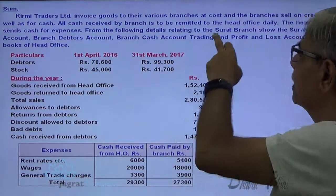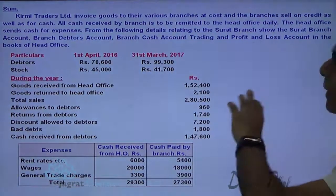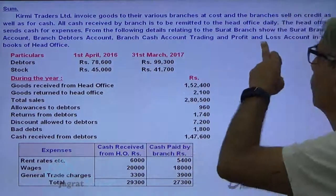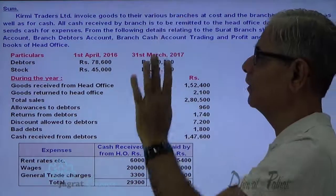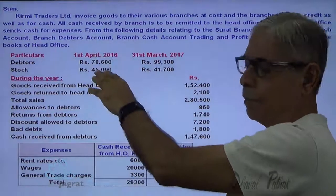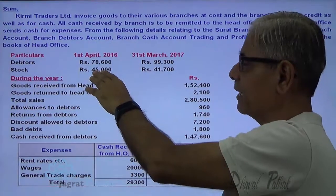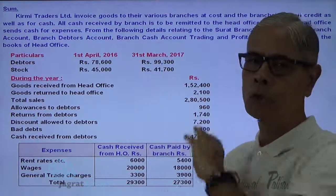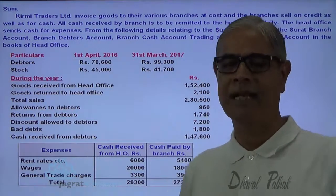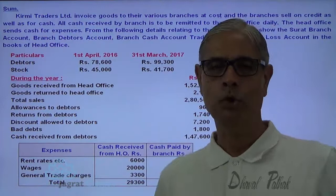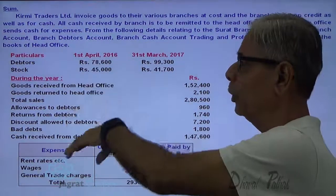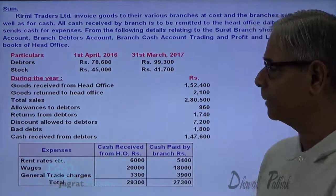From the following details relating to the Surak branch, show the Surak branch account, branch debtors account, branch cash account, and trading profit and loss account in the books of head office. The opening balance of assets is given to the branch at the beginning of the year. The closing balance of assets is taken away from the branch at the end of the year because the branch does not have a separate legal existence. These are the transactions that have taken place during the year.